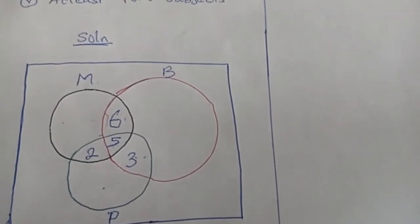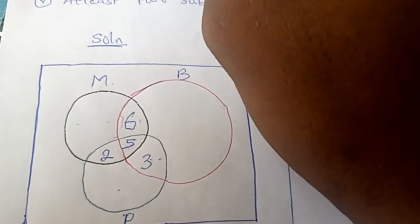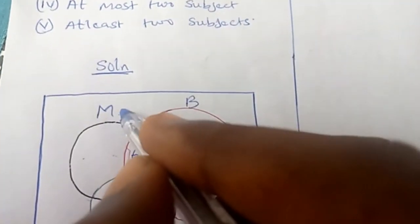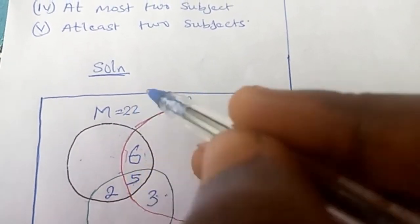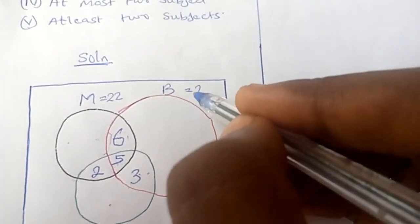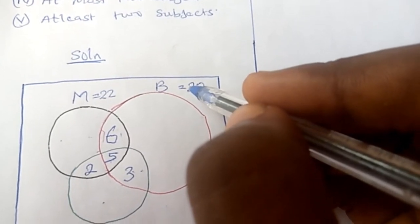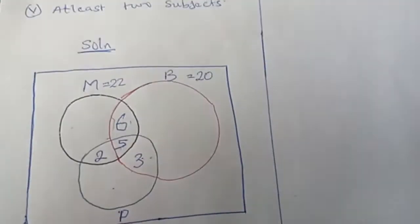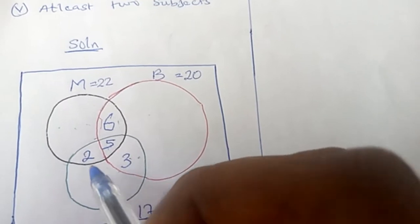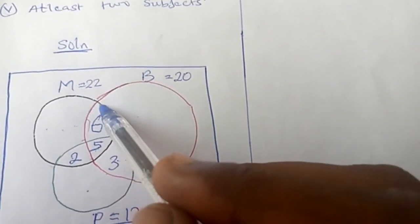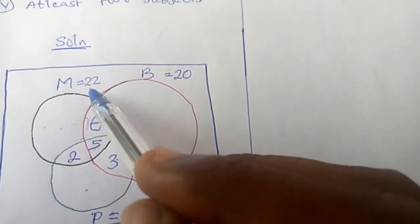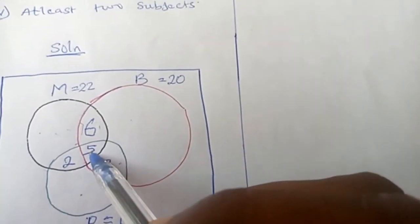Now you go back to the individual set totals from the question: mathematics = 22, biology = 20, physics = 17. To find mathematics only, you consider that the whole black circle belongs to mathematics, so every number inside it must sum to 22. The values already placed inside the math circle are 6, 5, and 2, which you will subtract from 22 to find the math-only region.